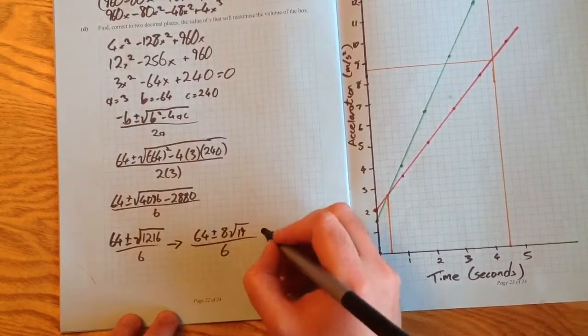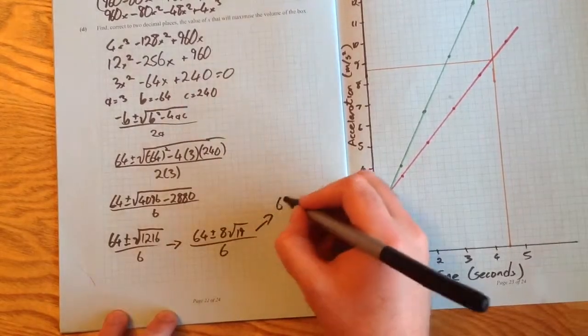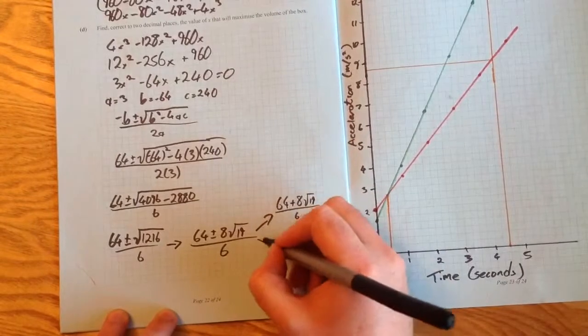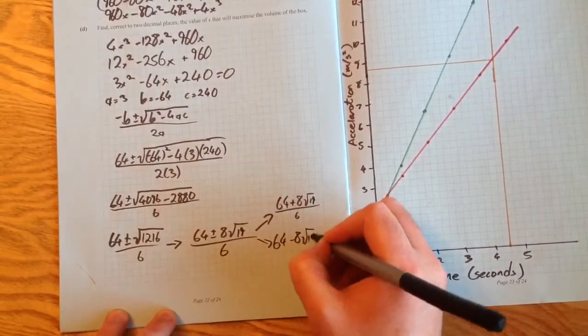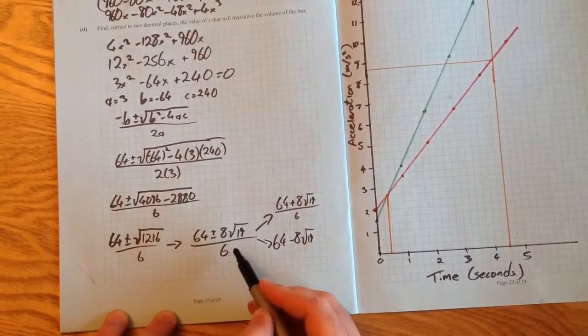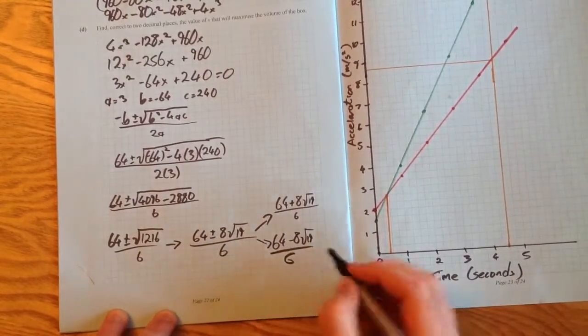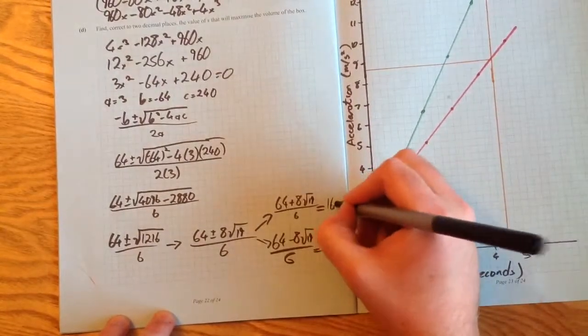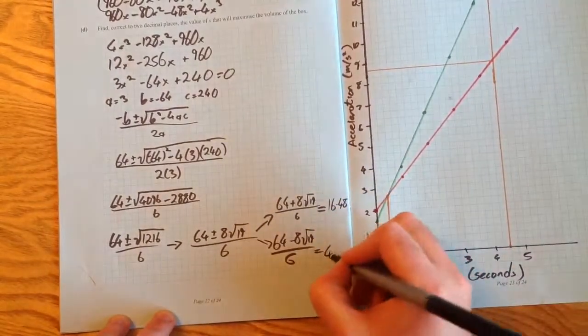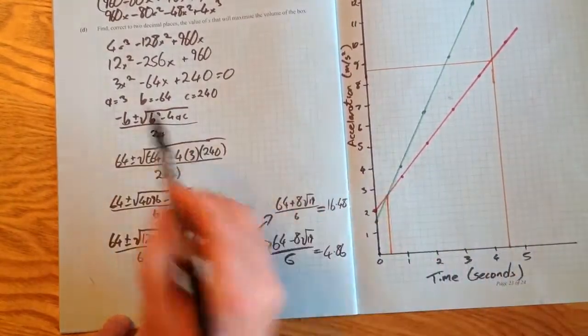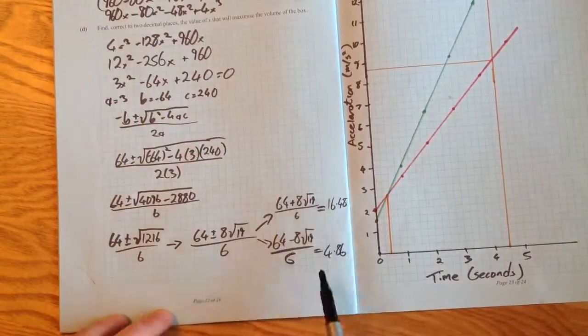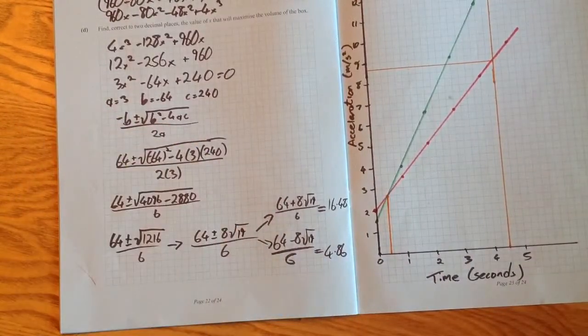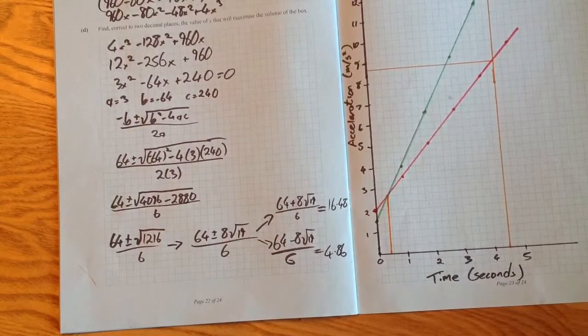We split this up into a positive and negative sum: 64 plus 8 root 19 divided by 6, and 64 minus 8 root 19 divided by 6. When you put these into your calculator, you get 16.48 and 4.86, both correct to 2 decimal places. So there are 2 values for x that will satisfy that equation. And that's paper 1.